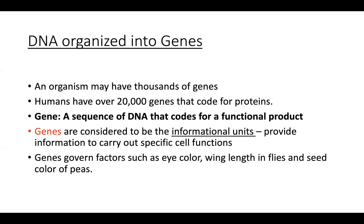By definition, a gene is a sequence of DNA that codes for a functional product. Genes are informational units — they provide information to carry out specific cell functions. Think about this: you have thousands of different cells in your body. How do all these cells get their different jobs? How is your skin cell any different from a beta cell produced in your pancreas? The answer lies in the protein expression at any given moment in that cell — depending on the combinations of genes and proteins that are expressed, that's going to dictate how that cell functions.